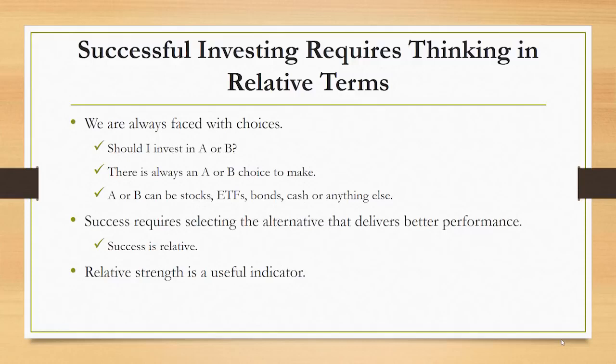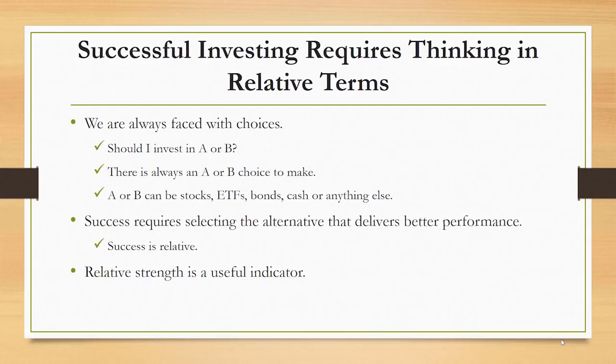Investing always requires a relative decision. If we're deciding whether to buy a stock or not, we're deciding between A and B basically. Should we buy the stock, choice A, or should we hold cash, choice B? If we're looking at two different stocks, it's an A or B choice. Investing always comes down to deciding between A or B. Success results if we select the alternative that delivers the better performance. Investing success is defined in relative terms, and relative strength is a useful indicator for that.